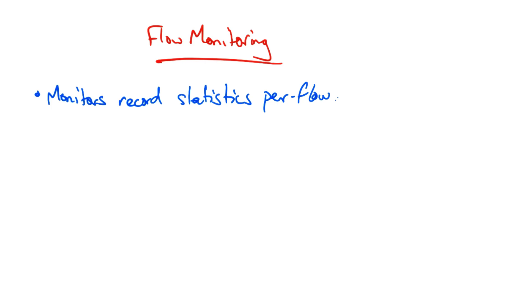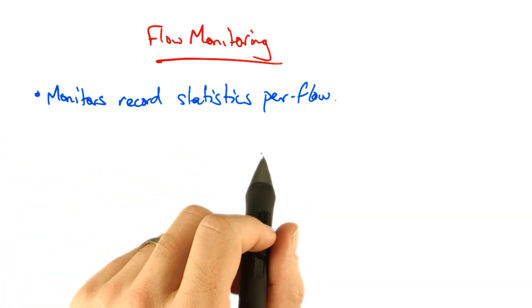In flow monitoring, a monitor, which might actually be running on the router itself, records statistics per flow.